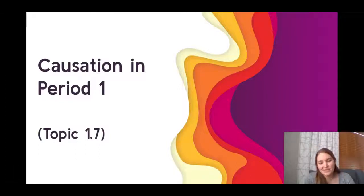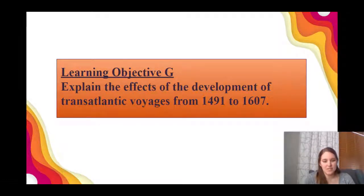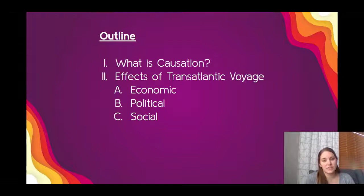Hello, everyone. Today we're going to be tackling topic 1.7 in the APUSH curriculum, which is called Causation in Period 1. As always, we want to start off with the learning objective set forward by the College Board: to explain the effects of the development of transatlantic voyages from 1491 to 1607. We're going to talk about causation, what it is, and then tie it back to the objective — the economic, political, and social effects of the transatlantic voyages.